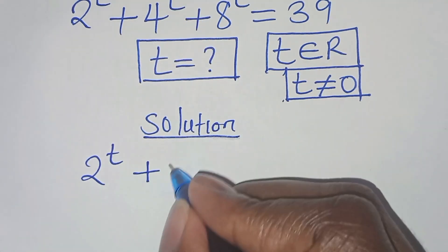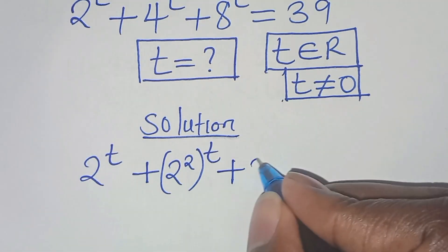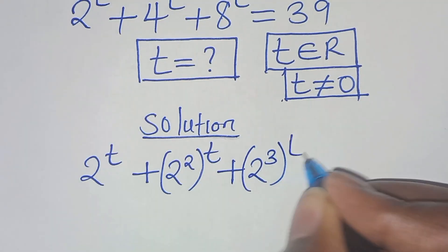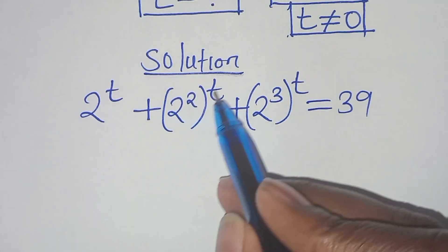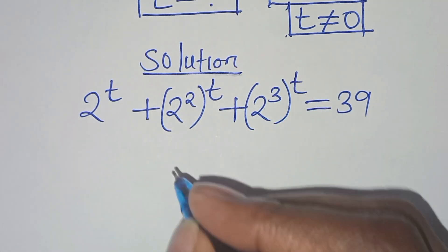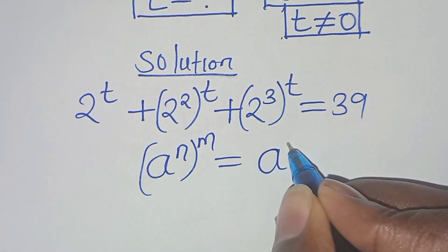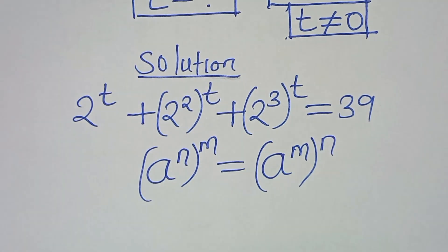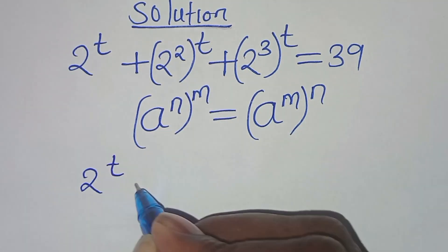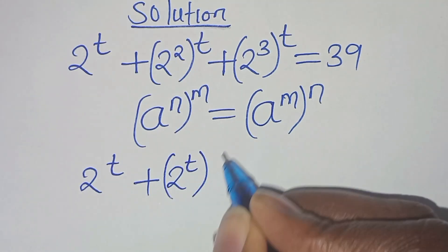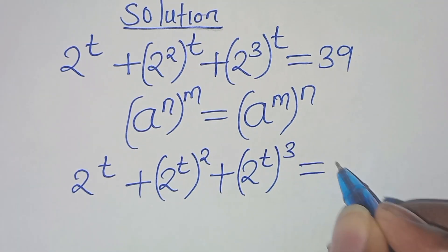We have 2 to the power of t, plus we can express 4 to the power of t as 2 to the power of 2, raised to the power t, then plus 8 to the power of t, which can be expressed as 2 to the power of 3, raised to the power t. This is equal to 39. Now 2 to the power of 2 raised to t and 2 to the power of 3 raised to t are in the form of a to the power of n raised to power m, which we can express as a to the power of m times n. Applying this exponent property, we have 2 to the power of t plus 2 to the power of 2t plus 2 to the power of 3t, equal to 39.